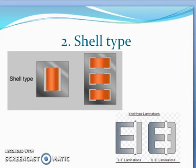In shell type transformers, the winding surrounds the core. The laminations are cut in the form of E and I. It has three limbs. The central limb carries the whole flux and side limbs carry half of the flux.